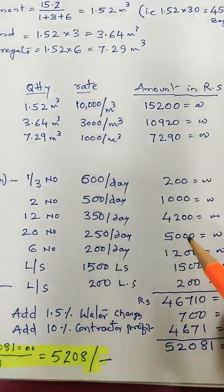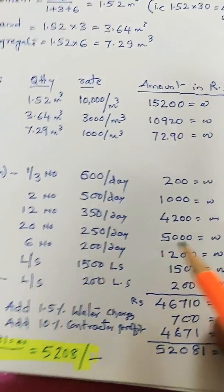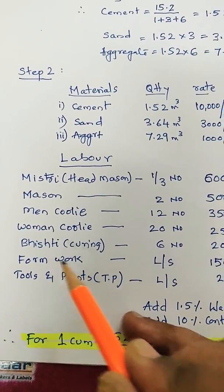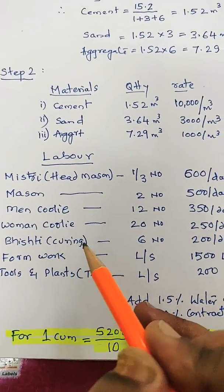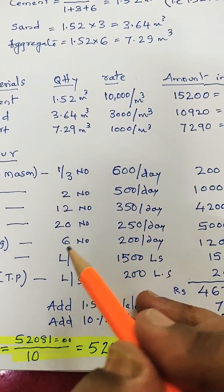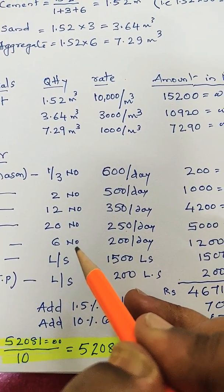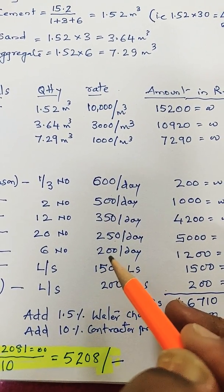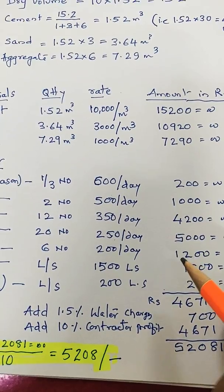Then bisti or curing person. For 10 cubic meters overall for 21 days or 28 days curing, you need six numbers considered, 200 per day, it is 1,200 rupees. It is done usually by a security person who is in charge.